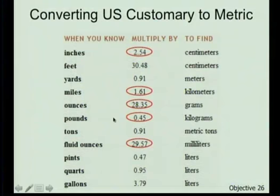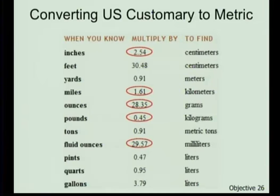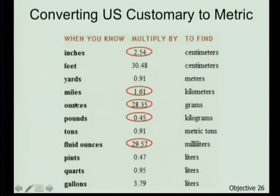The relationship is: if I know that 2.54 centimeters is an inch, I can jump over the canyon at that point and then calculate whatever I want on the other side. I already know 12 inches is a foot, 3 feet is a yard, and 5,280 feet is a mile. So I start with centimeters, jump over to inches, then use those known English conversions to get to feet, yards, or miles. Same idea with ounces to grams for mass, or fluid ounces to milliliters or liters.